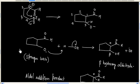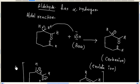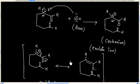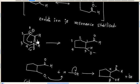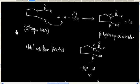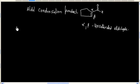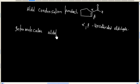Since we are forming the carbanion from the same molecule, and the attack is also occurring on the same molecule, we call this reaction an intramolecular aldol reaction. This reaction is an example of intramolecular aldol reaction with a five-membered ring formation.